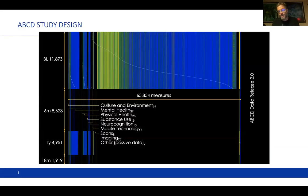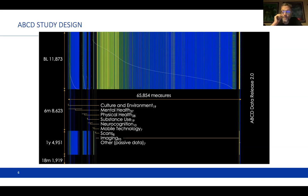I'm going to cover a little bit about the design of ABCD because it's important to understand some basic aspects. There are 65,854 measures per person at the baseline visit in the tabulated data — the files you can download directly from NDA. This does not include the full images or genetics data, but it includes tabulated imaging data. The measures come from a number of different domains organized according to work groups: culture and environment, mental health, physical health, substance use, neurocognition, mobile technology including Fitbit, brain imaging, and linked external data including geocoded environmental exposures.